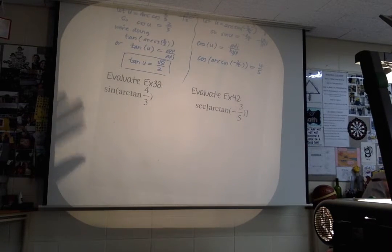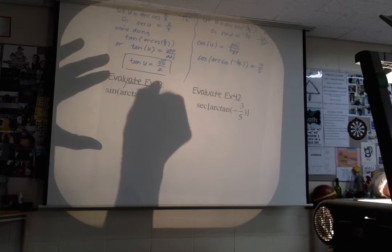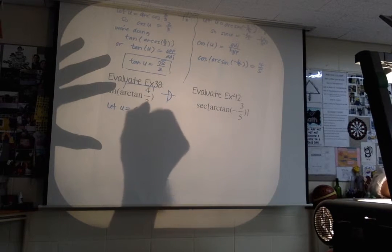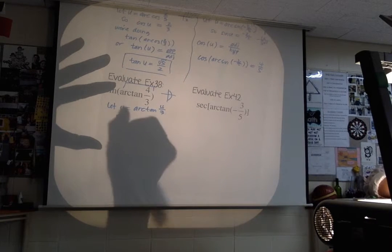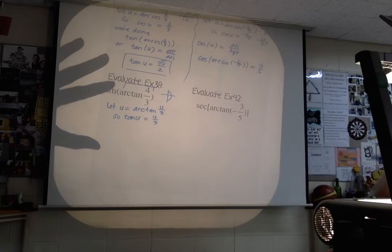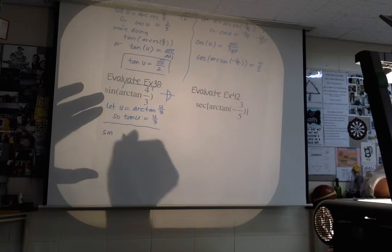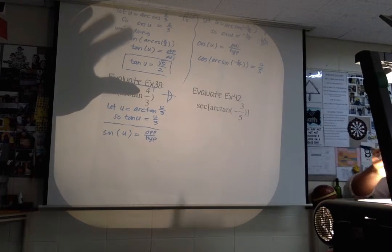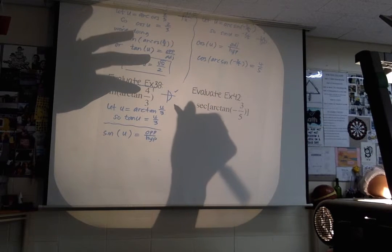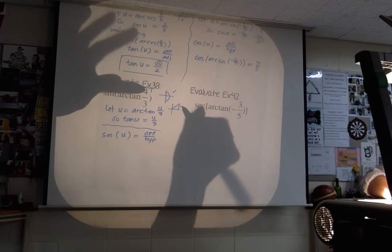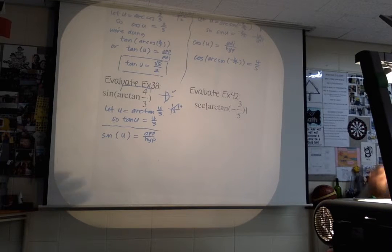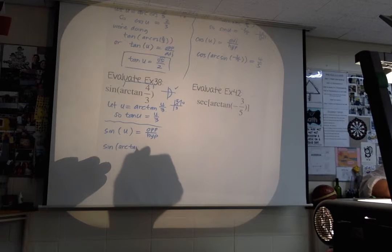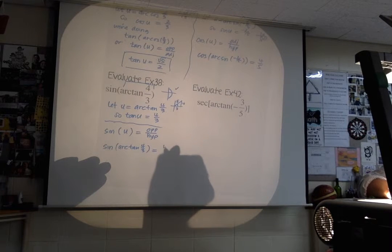How about sin(arctan(4/3))? Think about the range of arc tangent: negative π/2 to π/2. Let u equal arctan(4/3), so tangent of u equals 4/3. Sine of u equals opposite over hypotenuse. Arc tangent is positive here, so draw your triangle in the first quadrant. The ratio is a 3-4-5 triangle, so opposite is 4 and hypotenuse is 5. Therefore sin(arctan(4/3)) = 4/5.